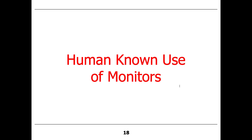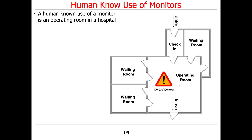What are some examples of monitor-like things? One example — a little far-fetched but not too far off — is an operating room in a hospital. You have a check-in area where you fill out paperwork or get your vital signs checked. You don't go directly into the operating room; you wait in the check-in room. Then one patient at a time comes into the operating room, so the doctors have exclusive access. Only one patient is in the operating room at a time.